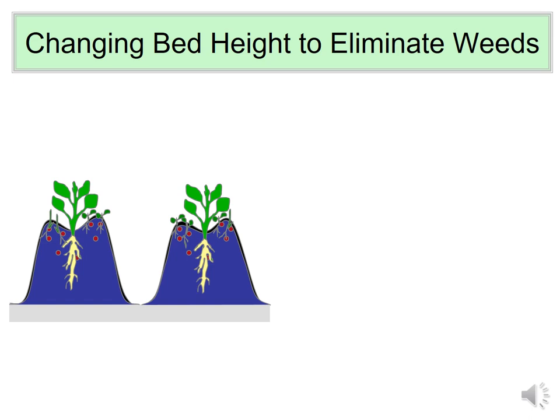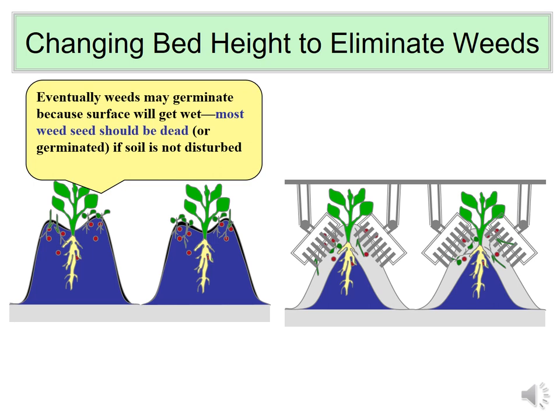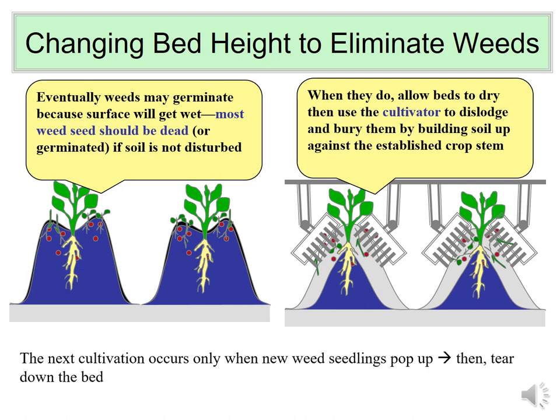Eventually the bed top will get wet, and weed seeds will germinate — but by then the crop is so well established it will be very competitive. Additionally, once crops are established and fully out of the ground, they can tolerate tillage operations like a rotary cultivator. You can pile soil up around the sides of crop plants; the weeds are so small they can't tolerate soil disturbance and get buried or dislodged. Don't irrigate right away after doing this — the crop tolerates the soil being piled up while weed seeds dry and die.